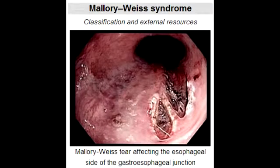What is Mallory-Weiss syndrome? Mallory-Weiss syndrome refers to bleeding from tears in the mucosa at the junction of the stomach and the esophagus. This is usually caused by severe alcoholism, retching, coughing, or vomiting, and occurs in alcoholics and bulimic patients.